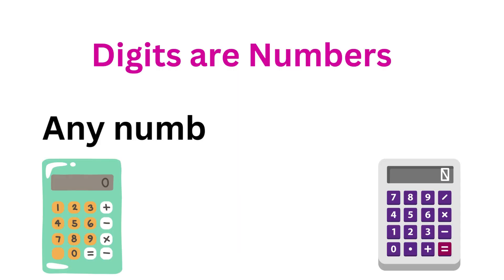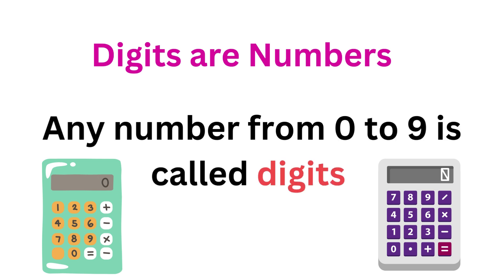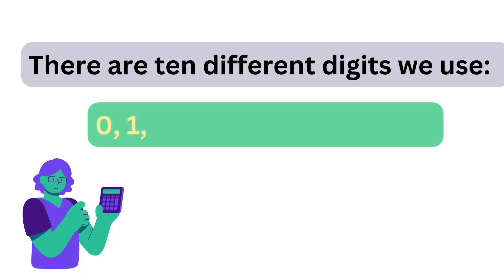So in simple words, digits are numbers. Digits are like tiny pictures we use to show numbers. Imagine them as little characters that help us write down how many things we have. Any number from 0 to 9 is called digits.